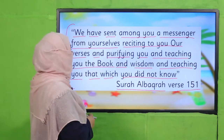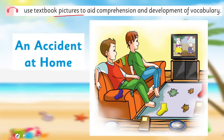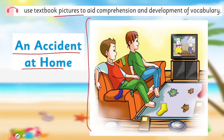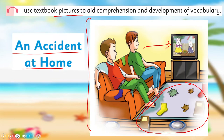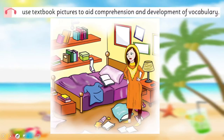Before we go to the text, we first have to understand it through pictures. Look at this picture — the title is 'An Accident at Home.' We can see two boys sitting on a sofa, watching TV, and on the floor there is stuff scattered around. When things are scattered we say it is untidy or messy. In the next picture, there is a girl — look at her face. She is angry and shouting. Maybe she is angry because of the mess and is trying to convey a message.